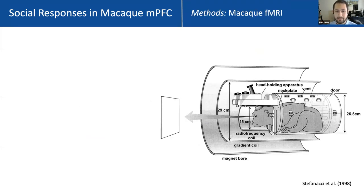We're going to test this using macaque fMRI — a powerful method for searching for specific functional signatures across the entire macaque brain. However, macaque fMRI isn't particularly suited for studying naturalistic social interaction in monkeys, as you have monkeys in a small tube, head-fixed, looking at a screen. What we can do relatively easily is have them fixate and show them images.